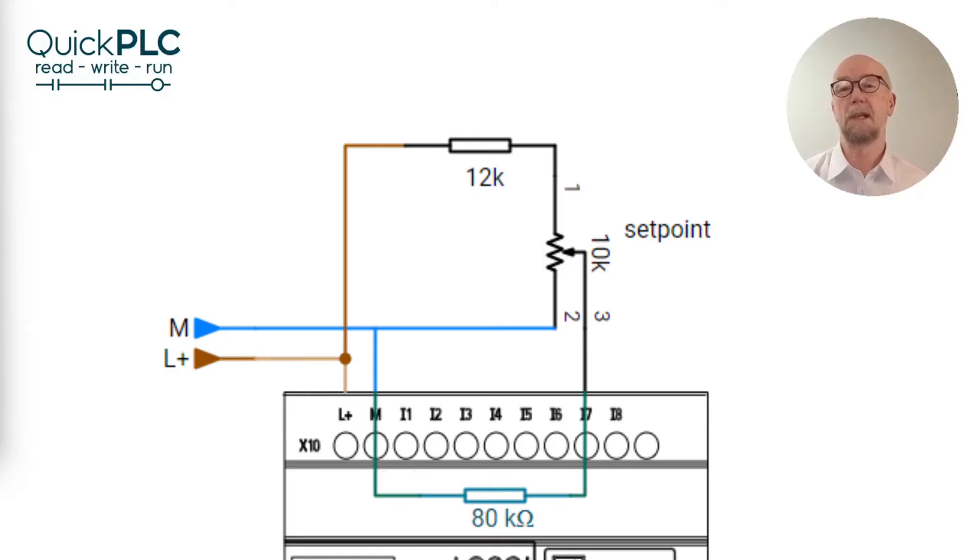We need to take into account the internal input impedance of 80 kilo ohms, which in parallel with the 10k pot will give a resistance of about 8.9 kilo ohms. So adding 12k in series for a 24 volt supply will give about 10.2 volt with the pot at maximum.